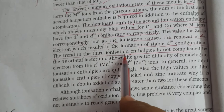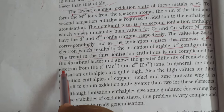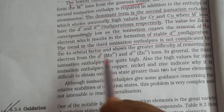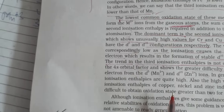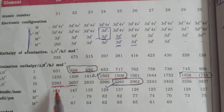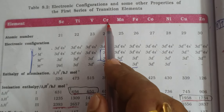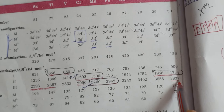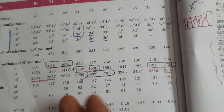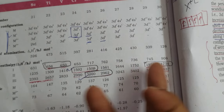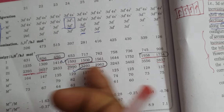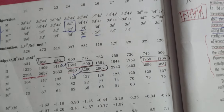The trend in the third ionization enthalpy is not complicated by the 4s orbital factor and shows the greater difficulty of removing an electron from d⁵ and d¹⁰ ions in general. In the third ionization enthalpy, chromium's value is 2,990 and zinc's is 3,837 — a large increase — because removal is from d⁵ for chromium (stable) and d¹⁰ for zinc (even more stable), and nuclear charge also increases.